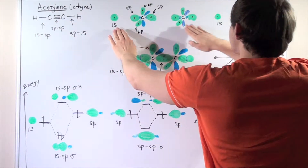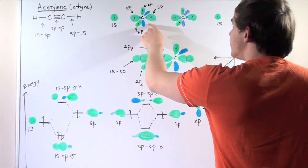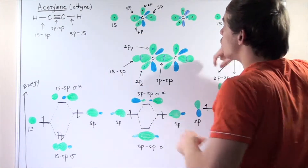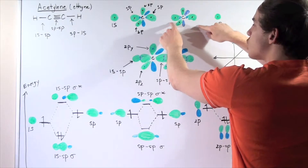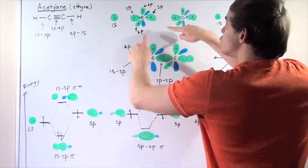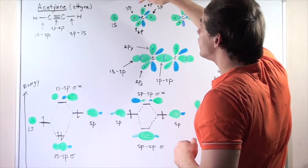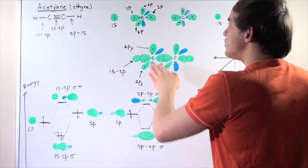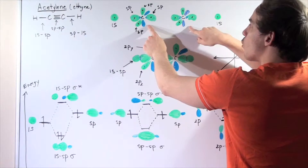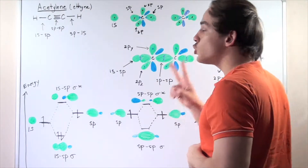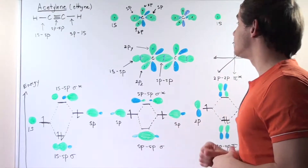Now let's take our two carbon atoms. These are all separated — they haven't yet combined to form our ethyne compound. Here we have one carbon and here we have the second carbon. Two of the orbitals for each carbon are SP hybridized. These two orbitals are pure 2P orbitals, and we have one electron in each. Altogether, each carbon donates four valence electrons. Each carbon also has two electrons in the 1S orbital, but that's not shown because the 1S orbital does not react.